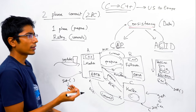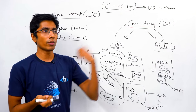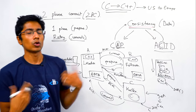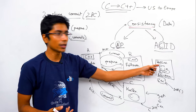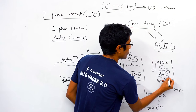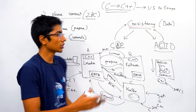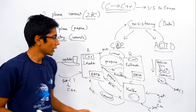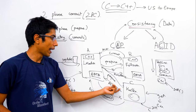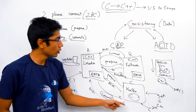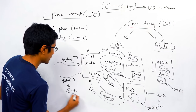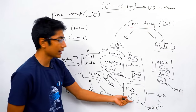It could be that a follower gets the commit message but can't send back an acknowledgement, causing retries. That's fine — you have a transaction ID. If you receive another commit for the same transaction ID after already committing, you just acknowledge again. Once the commit is acknowledged, the leader knows that the data it's showing is consistent with the data you're showing.